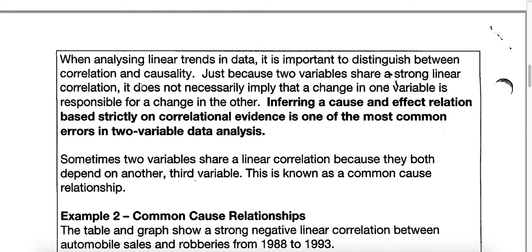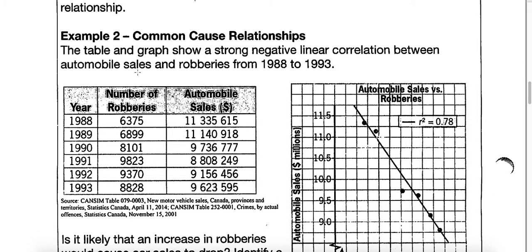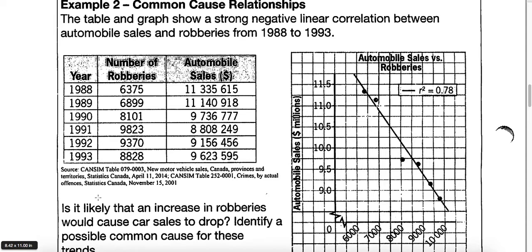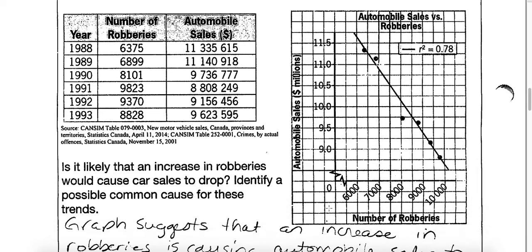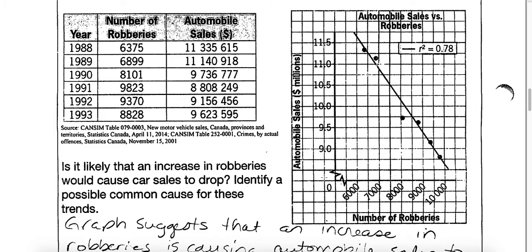Sometimes there's a problem if students just choose any two variables and plot them on a graph — the points can actually line up and suggest a really strong correlation. You have to be very careful with the variables you're choosing. For example, in example two, a student could collect data on the number of robberies in Canada from a StatCan data table, and look at automobile sales in Canada from 1988 to 1993. They put number of robberies on the x-axis and automobile sales on the y-axis, suggesting that the number of robberies is going to cause a change in automobile sales.